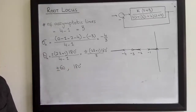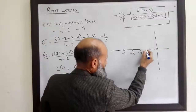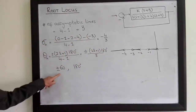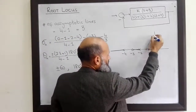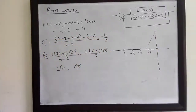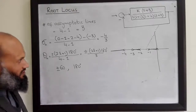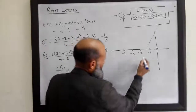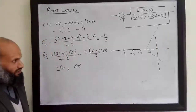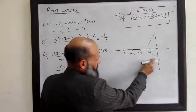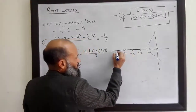Let's sketch the asymptotic lines. The center of the asymptotic lines is at -4/3. From this center we draw one asymptotic line at +60 degrees, one at -60 degrees, and another at 180 degrees. On graph paper you can plot these more accurately with geometrical tools.